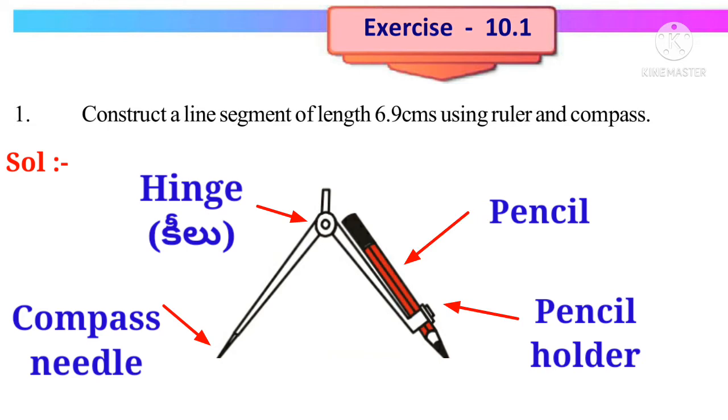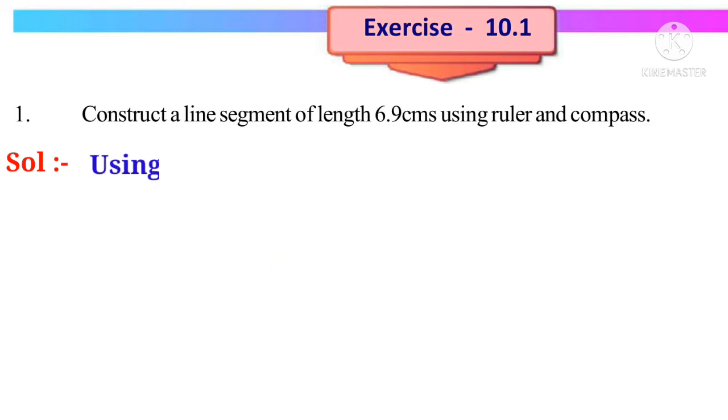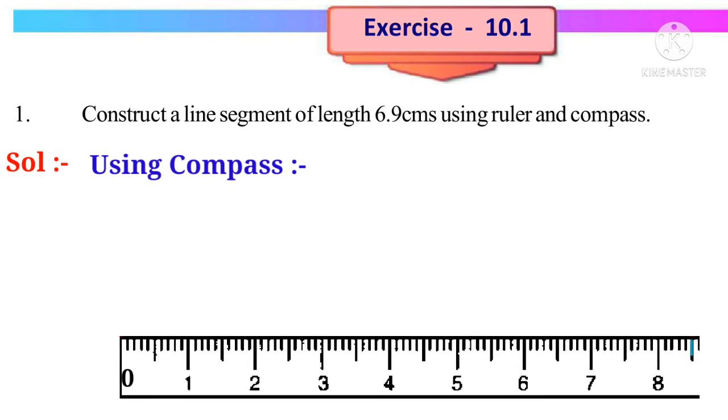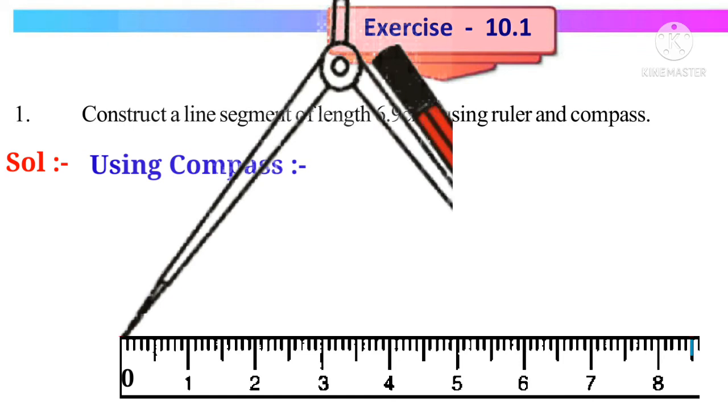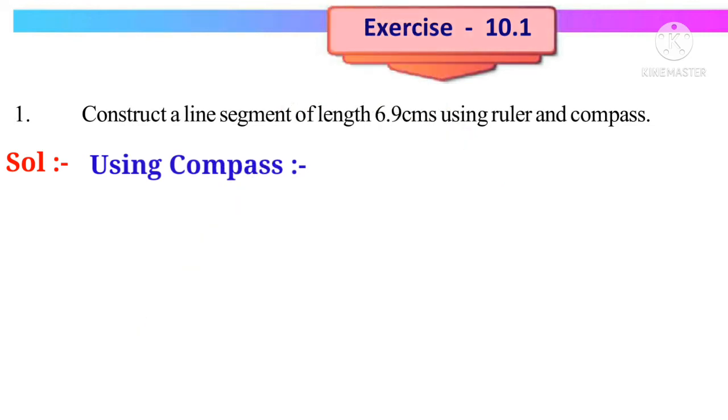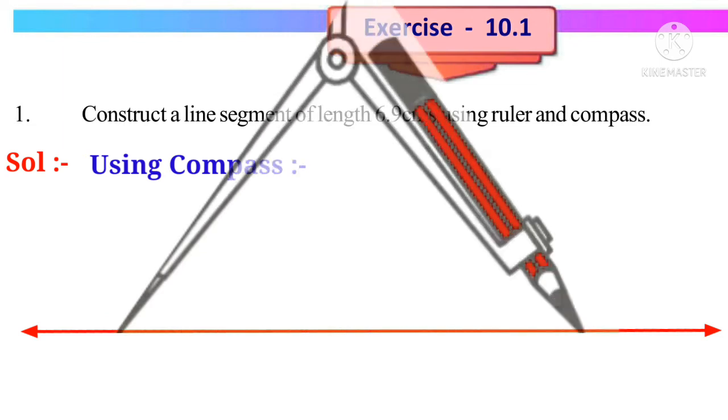Next, rotate through compass. We can draw arcs and circles using compass. Let us construct the line segment. For this, take the scale and put the needle part at 0 and extend the compass so that the pencil touches the 9 small lines after 6. Now remove the scale, draw a line and put the needle part at one end and the pencil part at another.